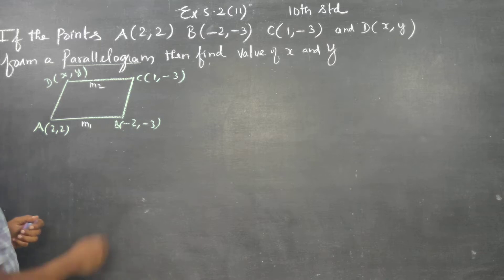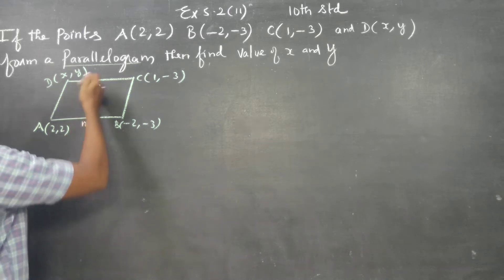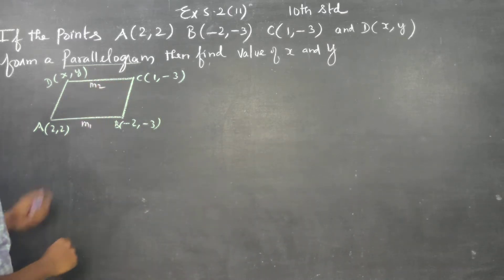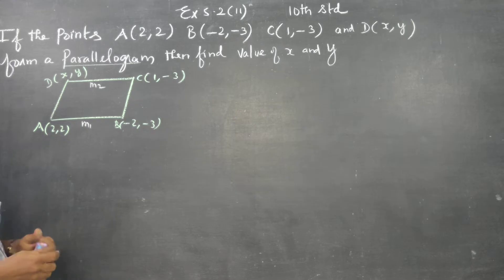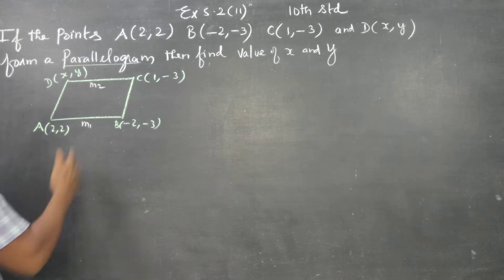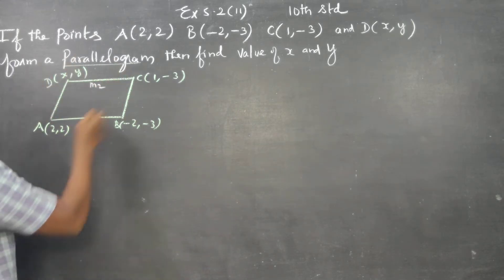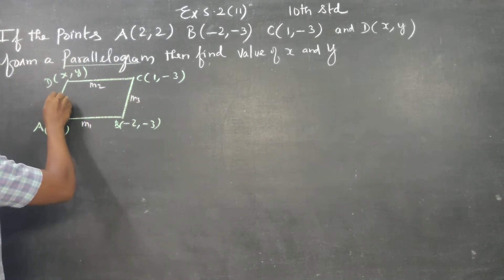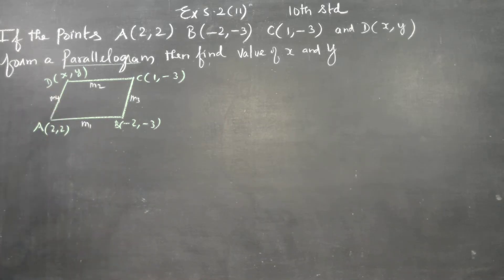In a parallelogram, opposite sides are parallel. That gives us the values of x and y. I am going to find the slopes of AB and DC, then BC and AD.